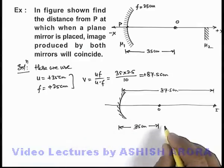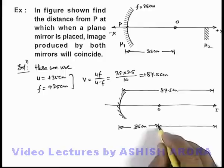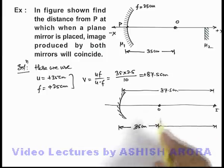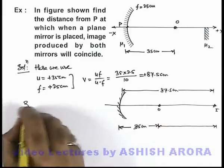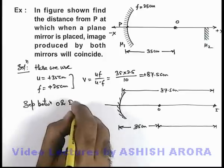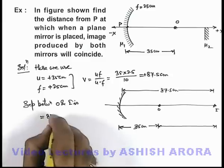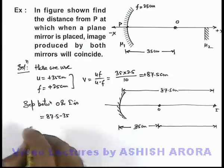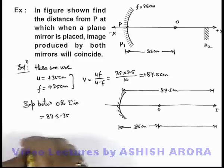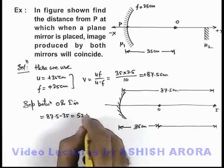And here if we just have a look on the separation between object and image, this separation we can directly write it is 87.5 minus 35. So separation between object and image—this separation is equal to 87.5 minus 35, and this distance will be 52.5 centimeters.